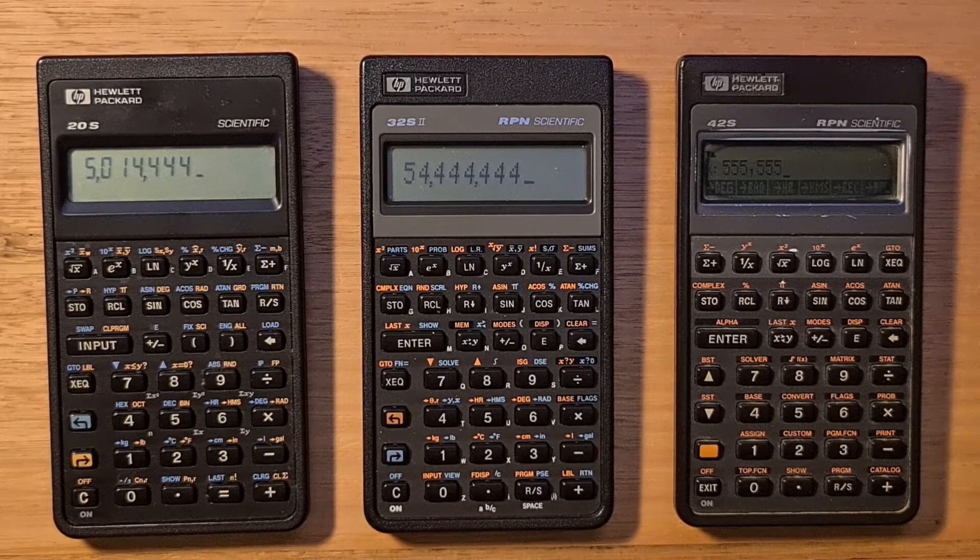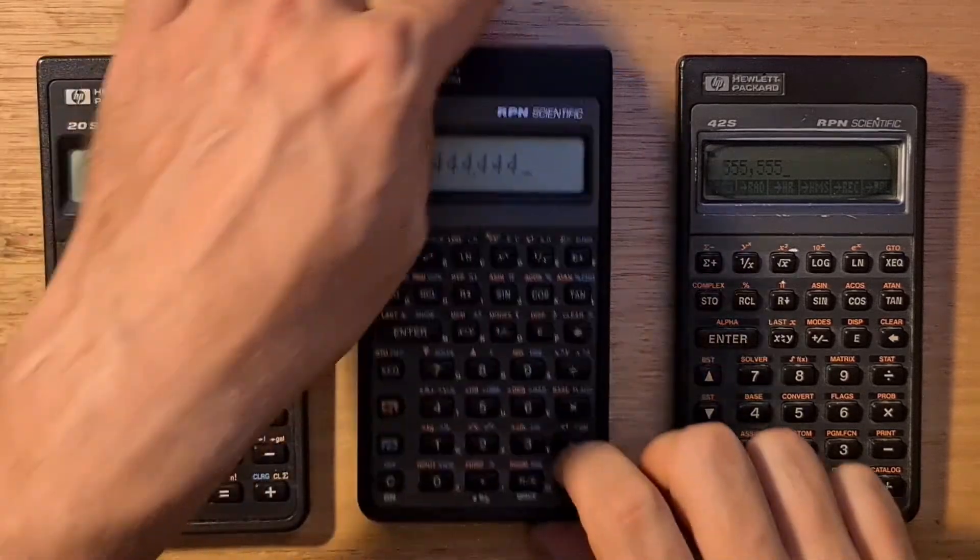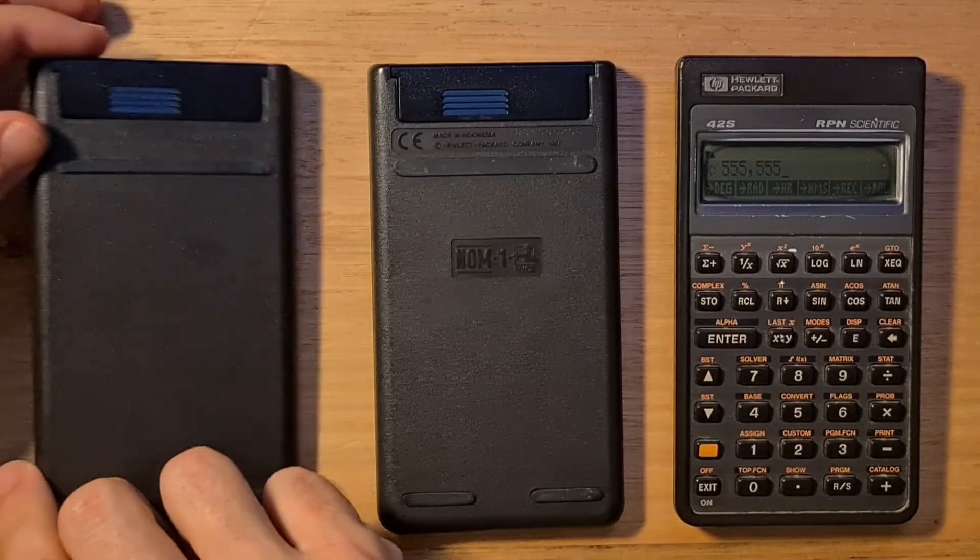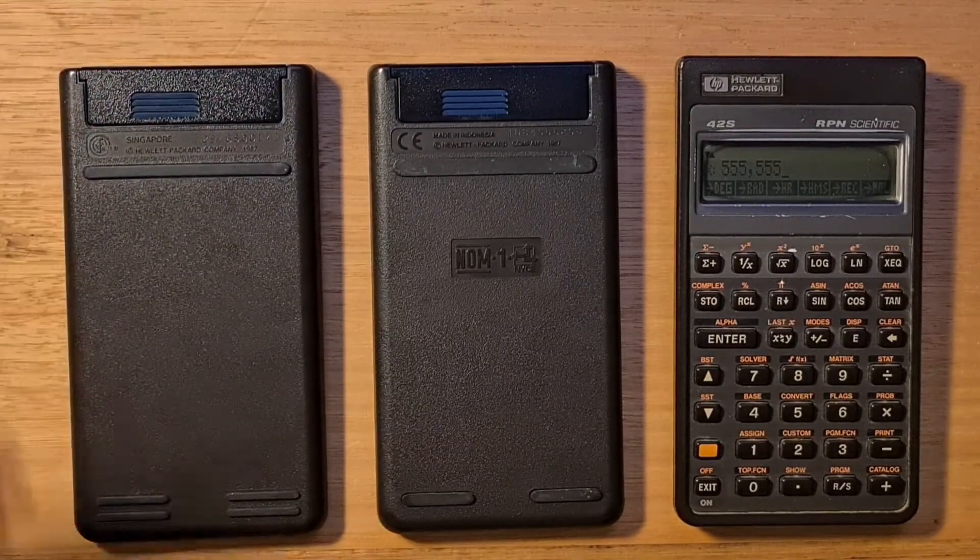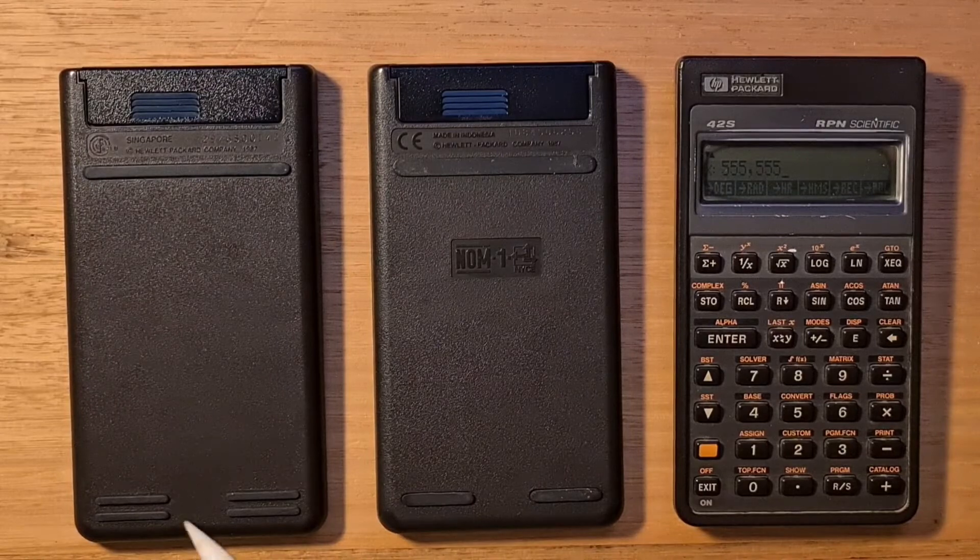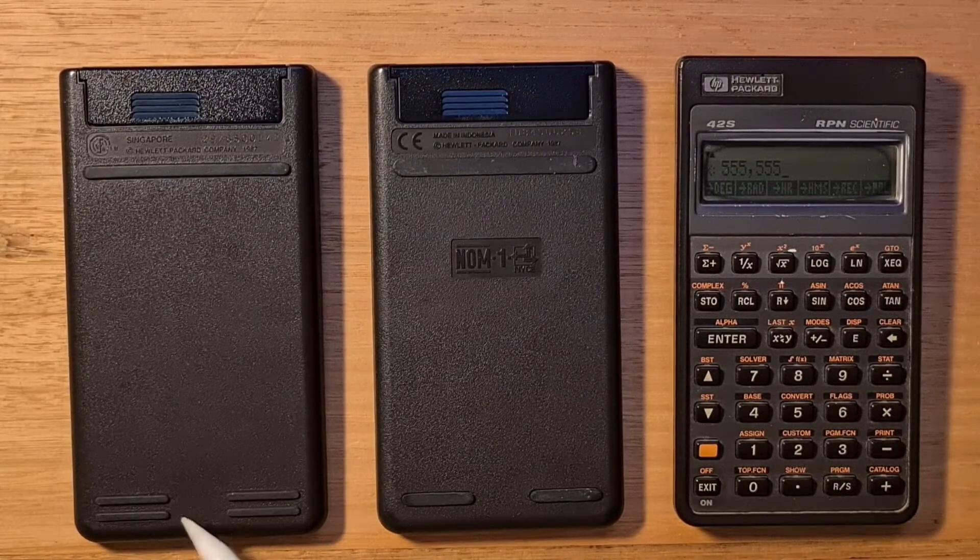Another subtle difference from earlier Pioneer calculators is visible on the back. The 32S2 only has two rubber feet, whereas older models had four.